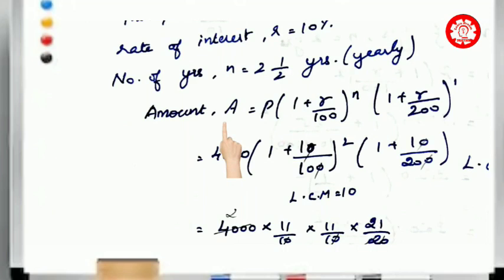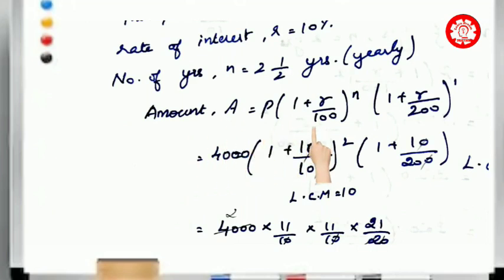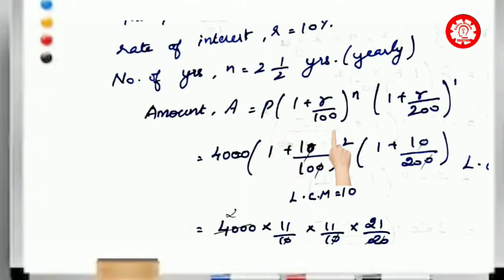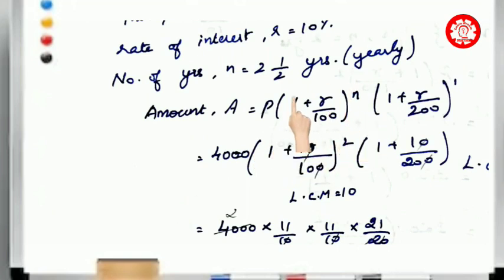We will use the amount formula first. The amount formula is: A is equal to P times 1 plus R by 100, whole power N. This calculation covers the 2 full years.